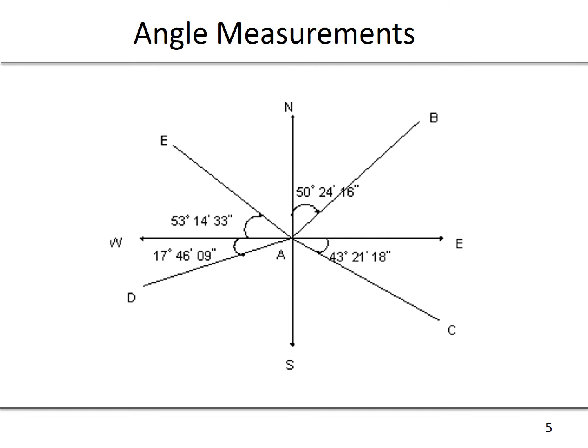For a bearing angle, the reference angle shifts from either north to south depending on which is closer to the line of interest, and then we'll move from that reference angle towards the direction either east or west some angle.